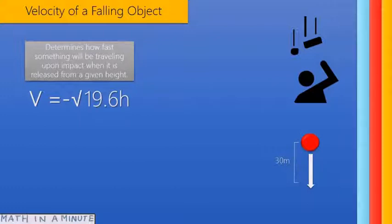The velocity of a falling object determines how fast something will be traveling upon impact when it is released from a given height. The velocity of a free-falling object is a function of the distance that has fallen.